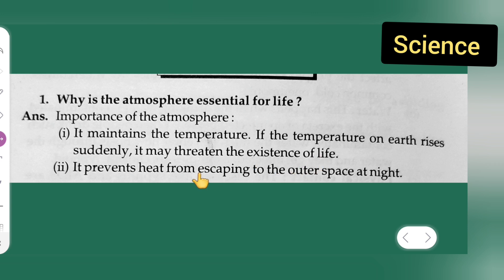The second point is it prevents heat from escaping to outer space at night. So these are the two important points explaining why the atmosphere is essential for life.